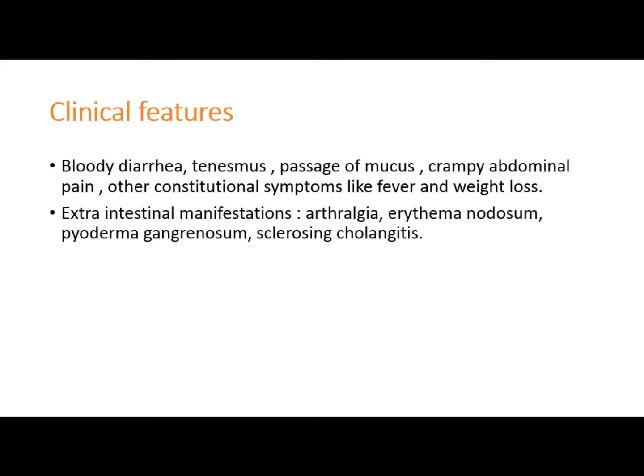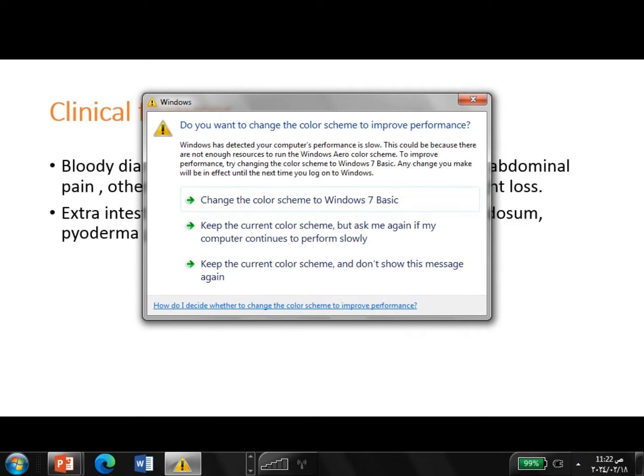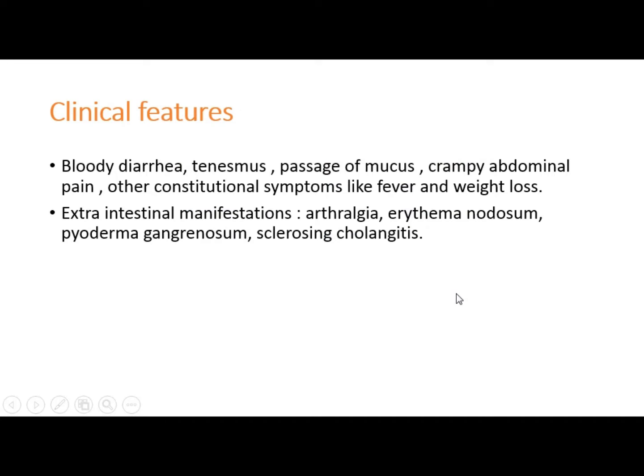Clinical features: the patient will have bloody diarrhea, tenesmus — which means a painful urge to pass stool when there is nothing in the rectum — passage of mucus, chronic abdominal pain, and other constitutional symptoms like fever, weight loss, and general malaise.